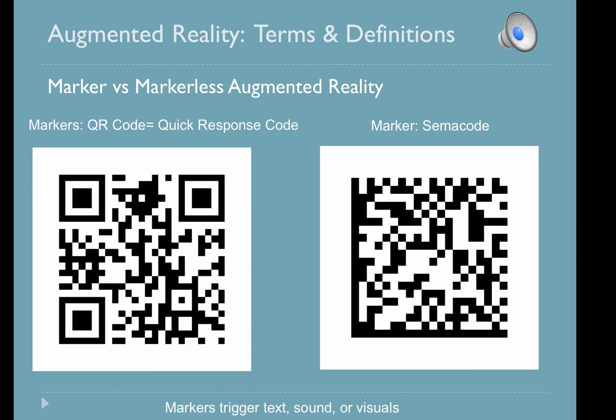Augmented reality can be triggered by marker or markerless technology. Markers include codes like QR codes and semicodes. These markers can trigger things like text, sound, and visuals. The two shown here are different types of codes, but they both trigger the same event.